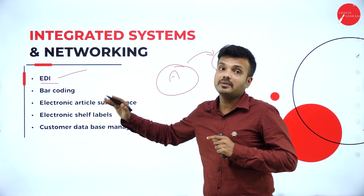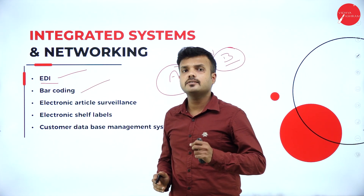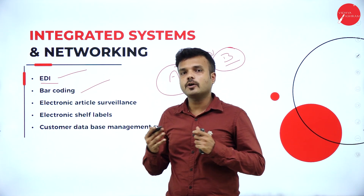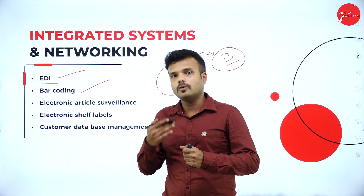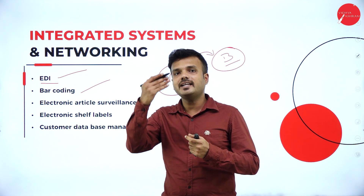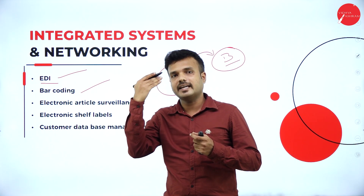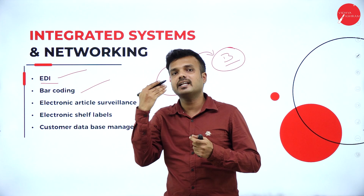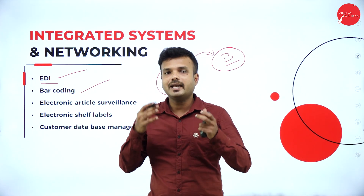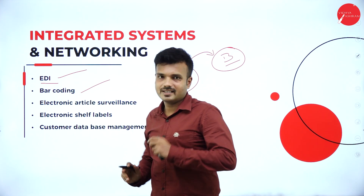EDI acts as a communication media from one business to another and is used by a wide variety of companies. When we purchase a product, they scan the barcode and issue the product. In that barcode, all details of the product are included — the details of the manufacturer, the expected rate, quantity, quality, and price of the product. The barcode is used to collect all relevant information about the specified product.